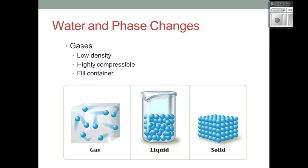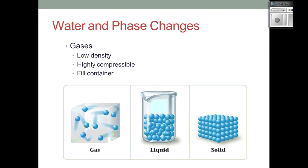Gases have low density. One of the assumptions we made is that those particles are very far apart and they do not interact with each other — they're small compared to the container. So if you think about one gas particle inside one of those water bottles, it's extremely small. Inside the container, we have a gas particle and then extra space, then another gas particle and more space — so it's a low density.